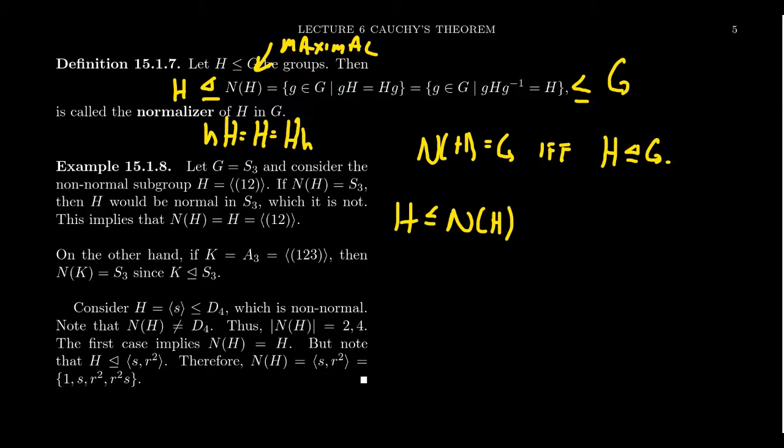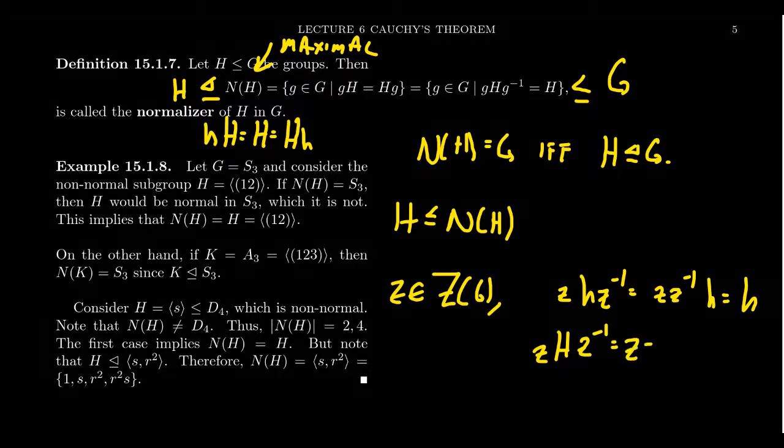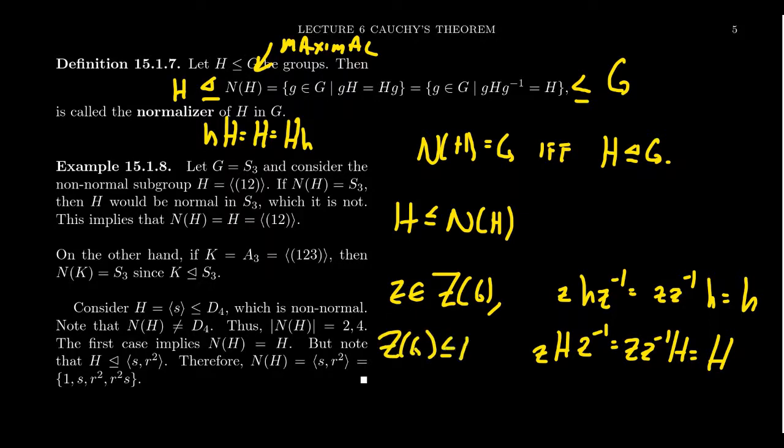But also, if you take an element from the center of the group, if you take some element of the center of the group, then you're going to have that, well, ZHZ inverse, this equals ZZ inverse H here. This equals H for anything. So in particular, the central elements commute with every element. Therefore, they commute with every set. If you take the subgroup H, this is going to equal ZZ inverse H, which is just H like so.